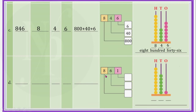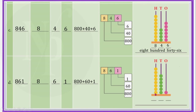Coming to D, the number is 861. Let us write down that number here. It has 8 hundreds, 6 tens and 1 one. The expanded form is 800 + 60 + 1. The place value of 8 is 800 because it is in the hundreds place. Place value of 6 is 60, it is in the tens place. And the place value of 1 is 1, it is in the ones place. Number of beads on hundreds place rod is 8, on tens place rod is 6, and on ones place rod is 1. The number name is 861.